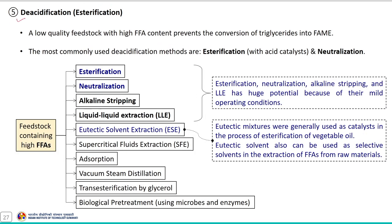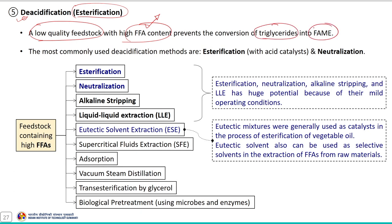Next is deacidification or esterification. Deacidification is normally performed with low quality feedstock with high FFA content, because high FFA content in oily feedstock prevents the conversion of triglycerides into FAME. The most commonly used deacidification methods are esterification and neutralization. Some alternative methods of pre-treatment for low quality feedstock are also available, such as vacuum distillation, transesterification by glycerol, biological pre-treatment, adsorption, supercritical fluid extraction, liquid-liquid extraction, eutectic solvent extraction and alkaline stripping.